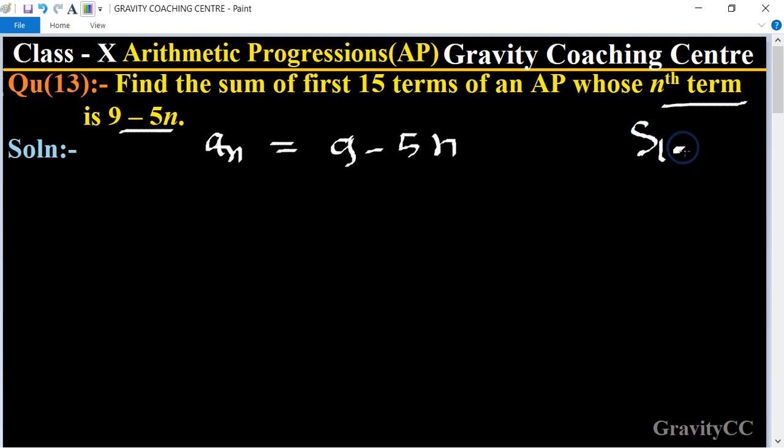So first we find a and d from the nth term. Putting n equal to 1, a1 equals 9 minus 5 times 1 equals 9 minus 5 equals 4.